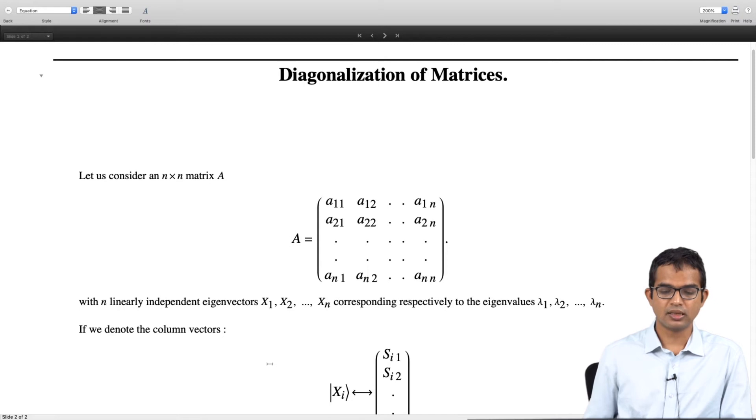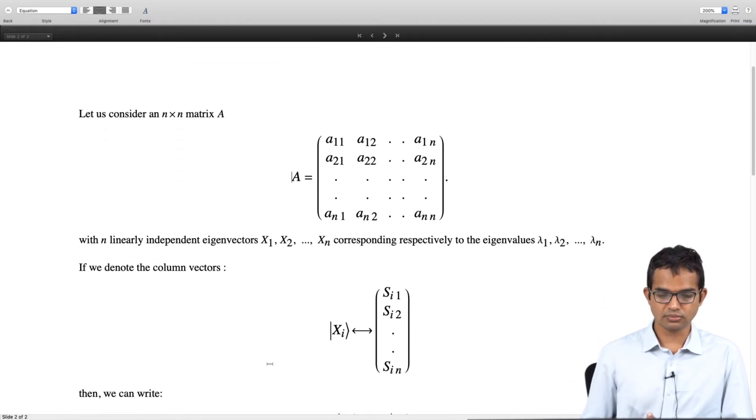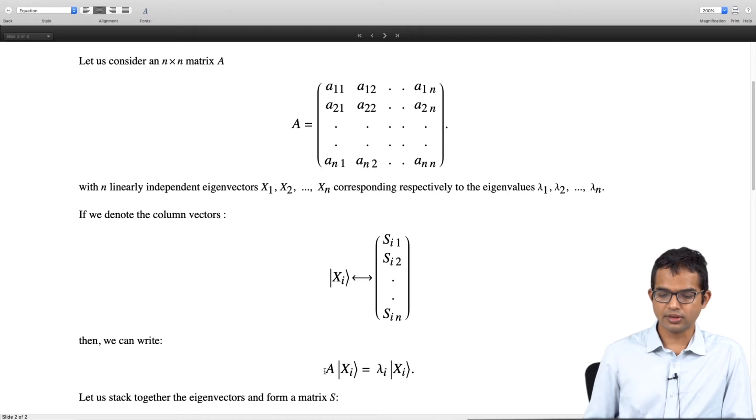If this happens, then let us collect all these eigenvectors. You have n linearly independent eigenvectors. We will notate this as x_i, with these coefficients s_i1, s_i2 so on all the way up to s_in. Then we have this defining property of these being eigenvectors is that A acting on x_i should give you lambda_i acting on x_i.